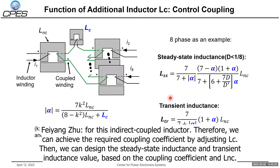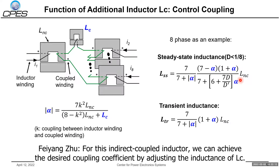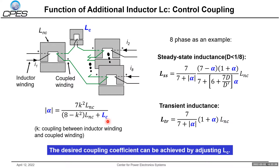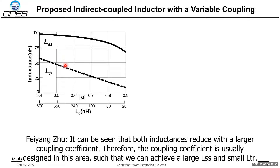For this indirect coupling inductor, we can achieve the desired coupling coefficient by adjusting the inductance of LC. Here shows how the static inductance and transient inductance change with the coupling coefficient. Typically the coupling coefficient is designed in a region such that we can achieve a larger static inductance and a smaller transient inductance.